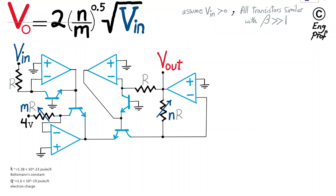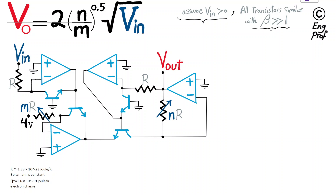To do the quick analysis, let's make the assumption that the input voltage is a positive voltage so that we can take the square root. Also, let's assume that the four BJT or bipolar junction transistors in this circuit are all similar, on the same substrate, very close to each other — essentially copy-paste of each other with the same junction properties — and assume that the current gain or beta of the transistors is large, much larger than one.